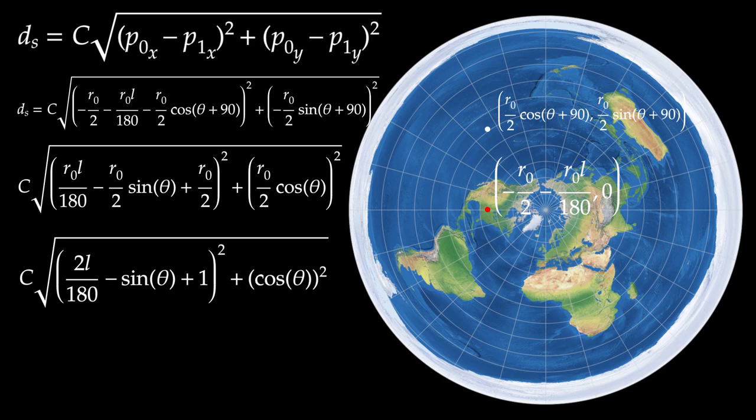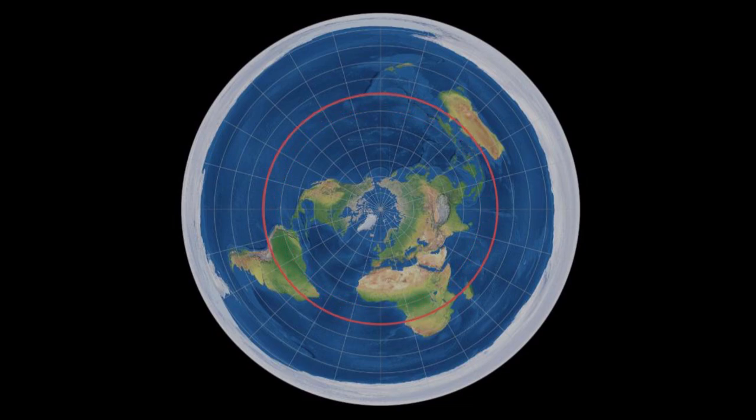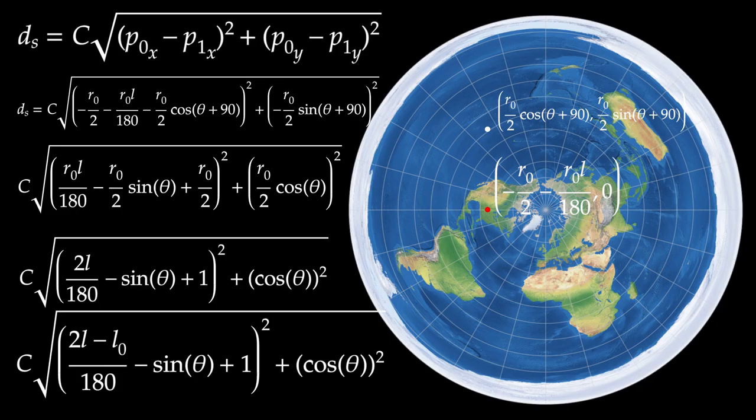This looks good, but we're not done quite yet. Most flat earthers explain seasons by saying the orbit of the sun above the earth grows and shrinks in size, causing summer and winter on different sections of the earth. Because there is also, surprisingly, no figures on how much the sun's orbit changes during this time, we can just subtract another constant L0 from L, because we no longer know the exact distance from the orbit of the sun to our latitude relative to R0. Now that we have that out of the way, we end up with c square root 2 L minus L0 over 180 minus sine theta plus 1 squared plus cosine theta squared.